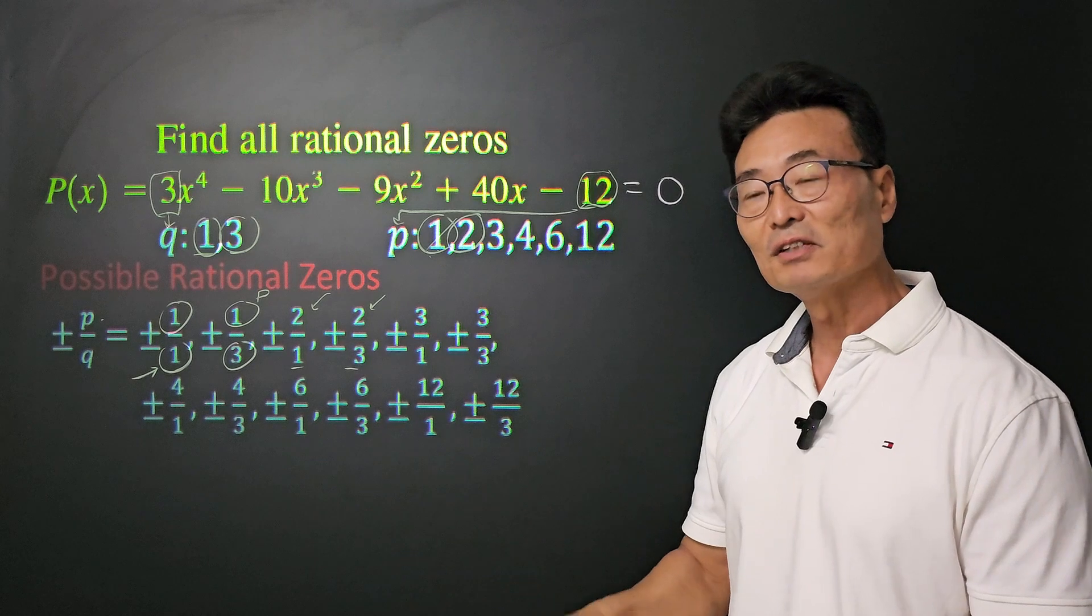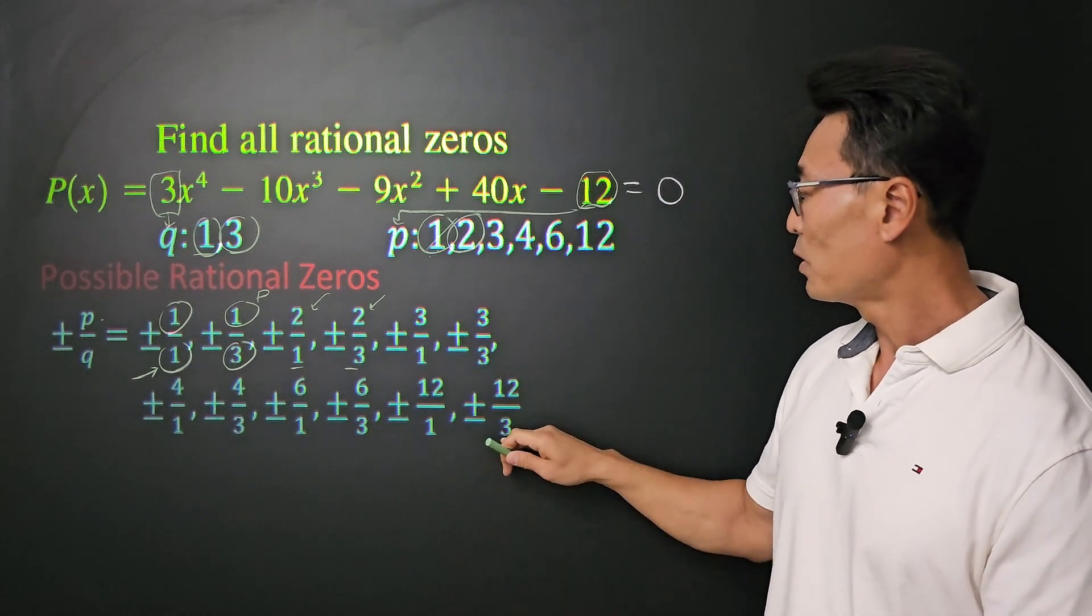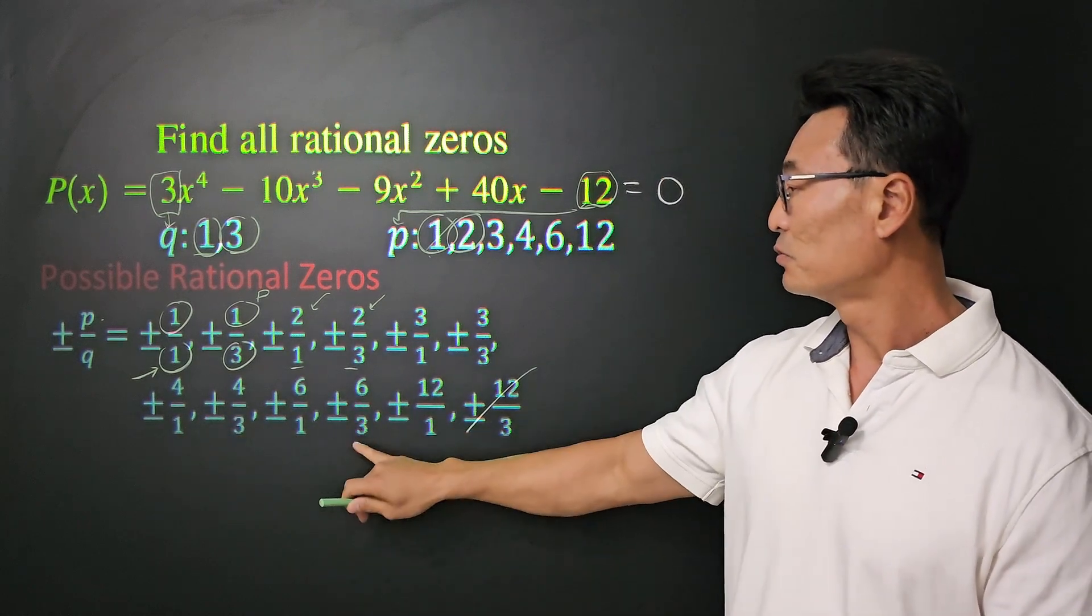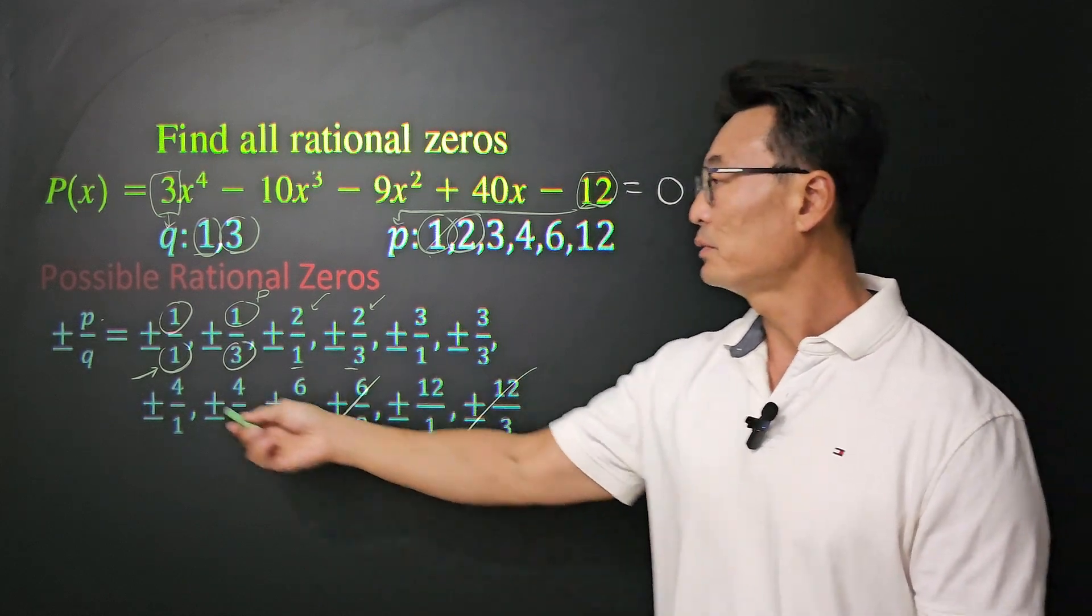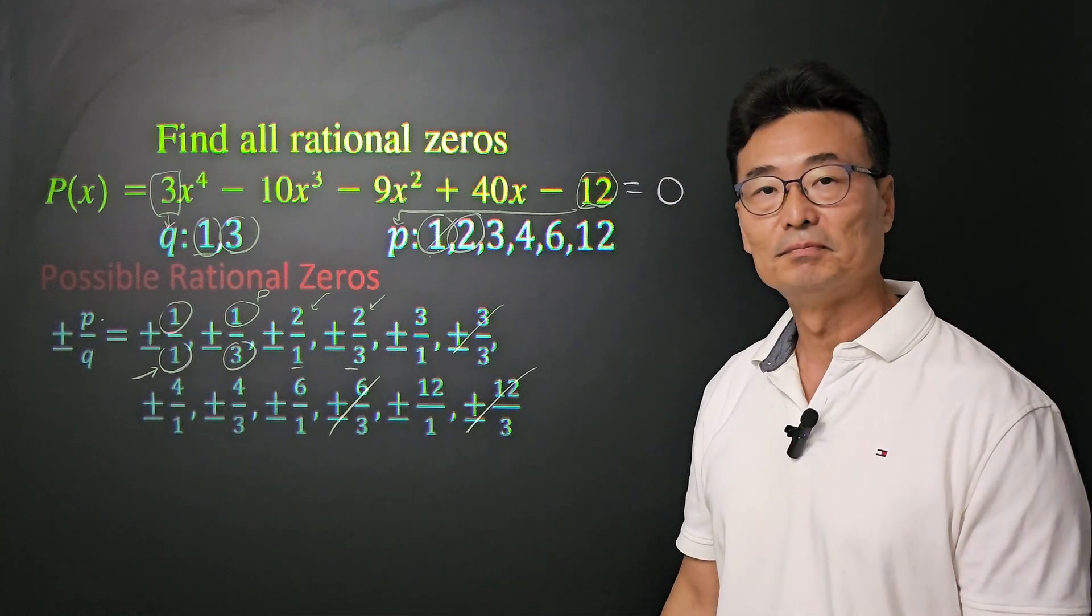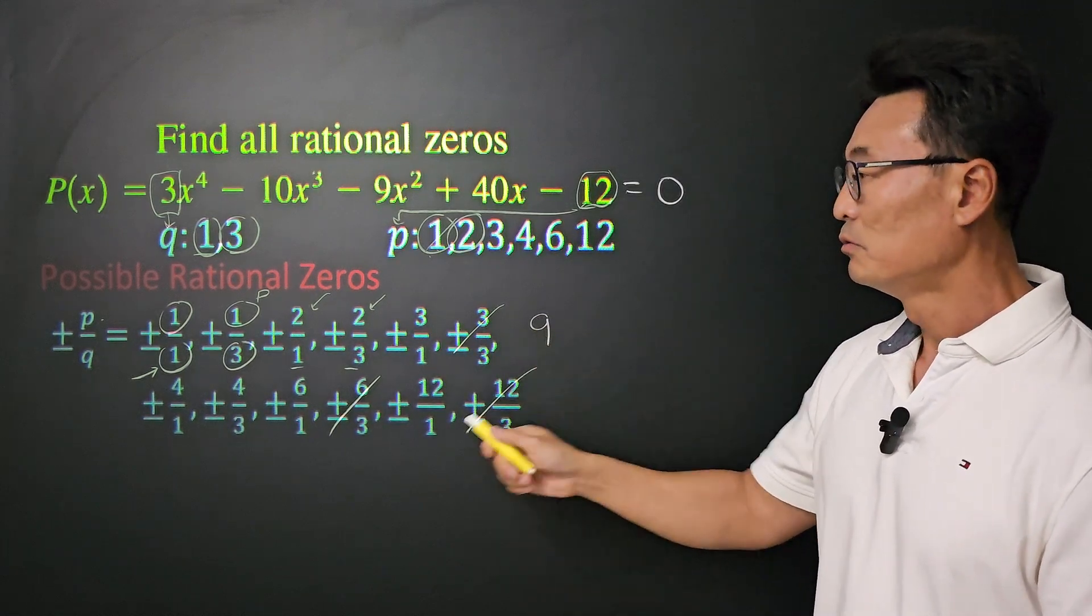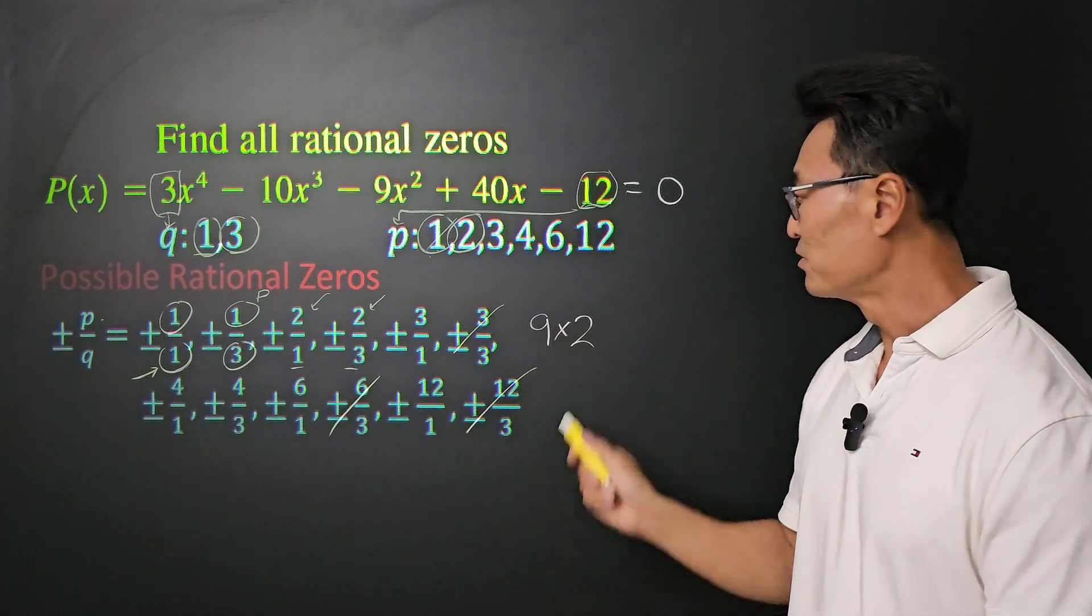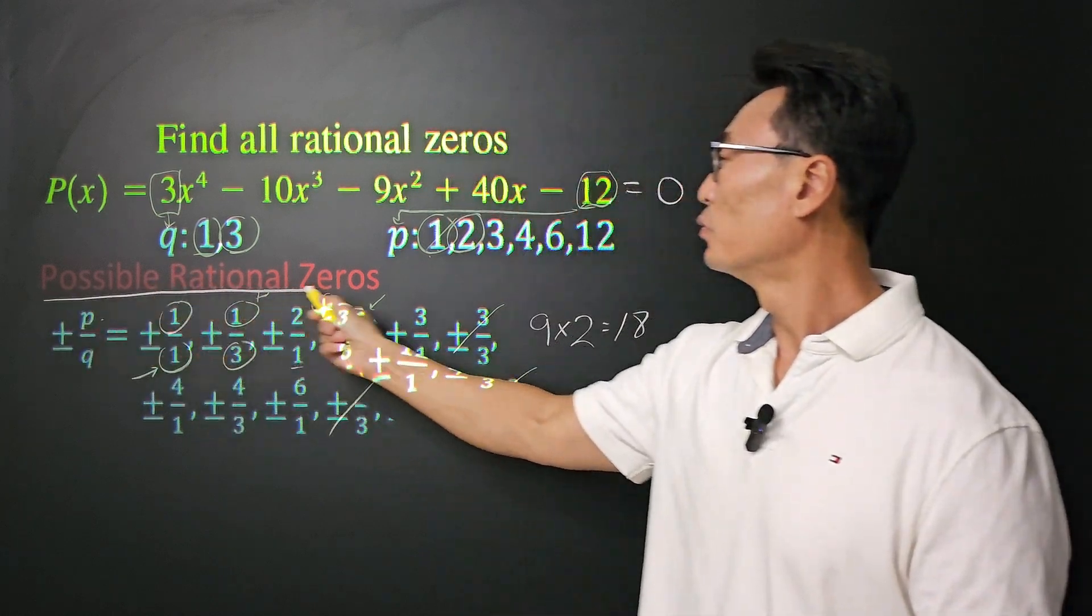However, because it's plus minus, we have 24. Here's the good news, though. Because 12 over 3 is the same thing as 4 over 1, we could eliminate that. Also, 6 over 3 is the same thing as 2 over 1, we could eliminate that as well. And then the 3 over 3 is the same thing as 1 over 1, so we could eliminate that value also. Then, we now have a total of 9 values times 2, because it's plus minus. So, we have a total of 18 possible rational zeros.